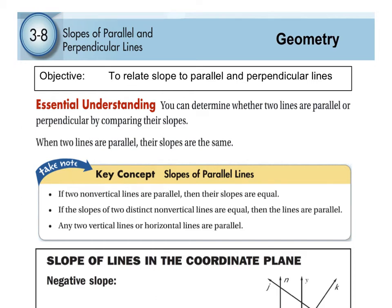This is the introduction to section 3.8, part 1, where we're going to start talking about relating slope to parallel and perpendicular lines. This is nothing that's new — you've done this before in Algebra 1 last year. We're going to hit on some topics about parallel and perpendicular lines and finding equations and all those things.